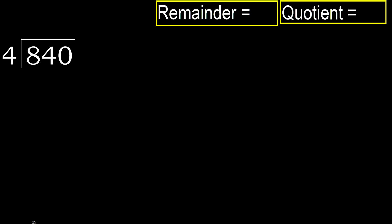840 divided by 4. 8 is not less, therefore with 8. 4 multiply by which number is nearest to 8 but not greater? 4 multiply by 3 is 12, which is greater. Multiply by 2 is 8, is not greater.